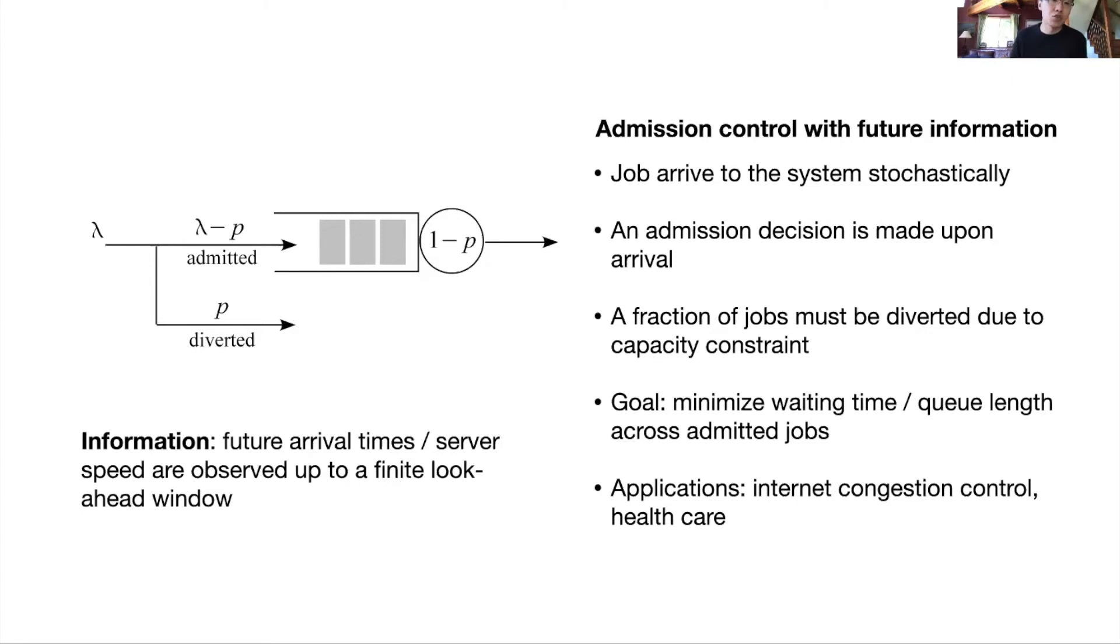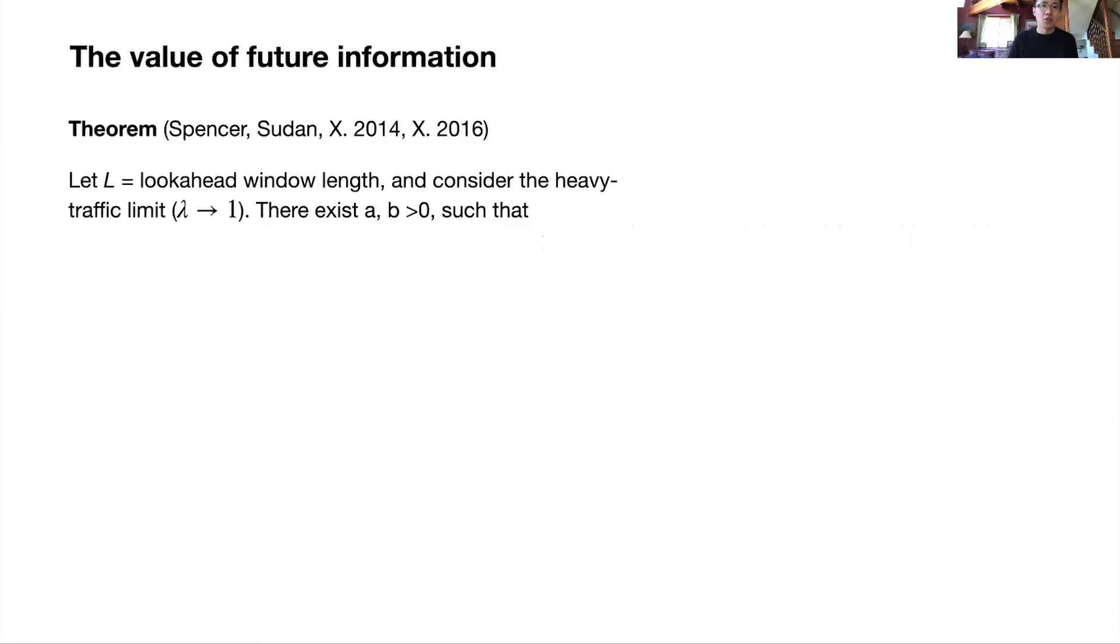You can look at a single queue with one server. Jobs arrive to the system stochastically. Admission control policy sits at the very front of the queue. When each job arrives, a decision is made as to whether the jobs are submitted to the queue or is to be diverted. Due to capacity constraints, a fixed fraction of jobs must be diverted. The goal of the designer is to figure out how do I do the diversion in such a way so as to minimize the waiting time experienced by the job inside the queue while not violating the diversion constraints. Application for this model is actually pretty wide, including internet congestion control, healthcare, and so on. The particular twist in the story is about information. Now we're going to assume that maybe thanks to a certain predictive algorithm, future arrival times and server speeds in our system will be observable up to a finite look-ahead window.